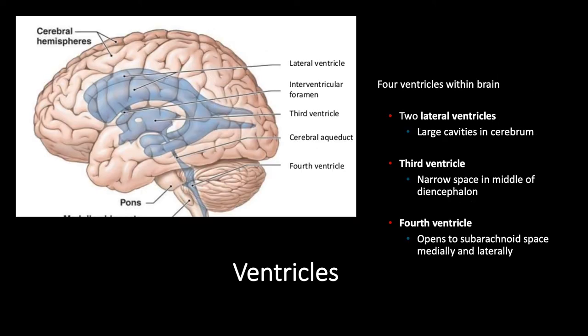There are four ventricles within the brain. There are two lateral ventricles — ventricles one and two — which are the largest cavities within the cerebrum, and this is where CSF is made. Then we have the third ventricle, a narrow space within the middle of the diencephalon. And then the fourth ventricle, which is important because it opens to the subarachnoid space. So CSF made within the lateral ventricles moves into the third ventricle, then into the fourth ventricle, and can then enter into the subarachnoid layer of the meninges to give us that floating protective cushion.